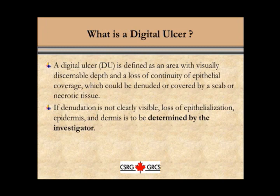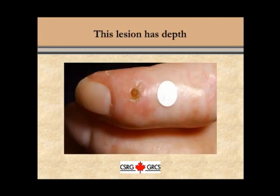First, what is in fact a digital ulcer? A digital ulcer is defined as an area with visually discernible depth and loss of continuity of the epithelial surface, which can be denuded completely or covered by a scab or necrotic tissue. An example of a digital ulcer is seen in this photograph, in which it is clear that there is discernible depth to this lesion. The lesion must have depth to be determined to be a digital ulcer.